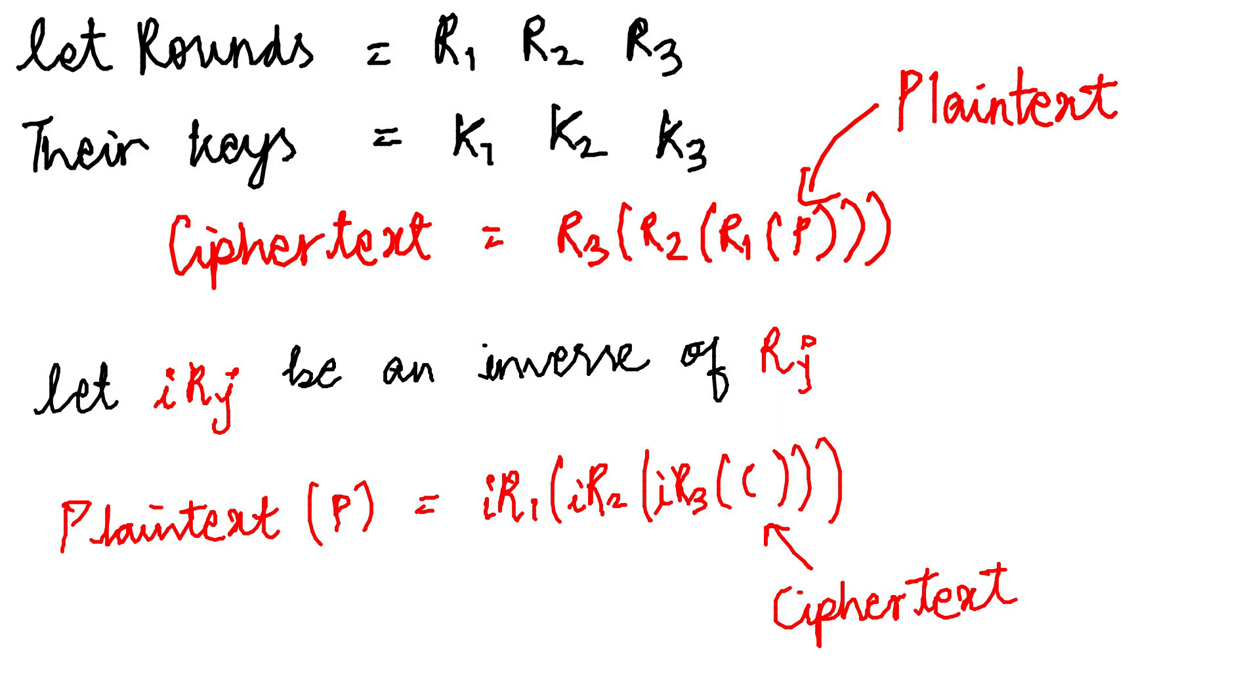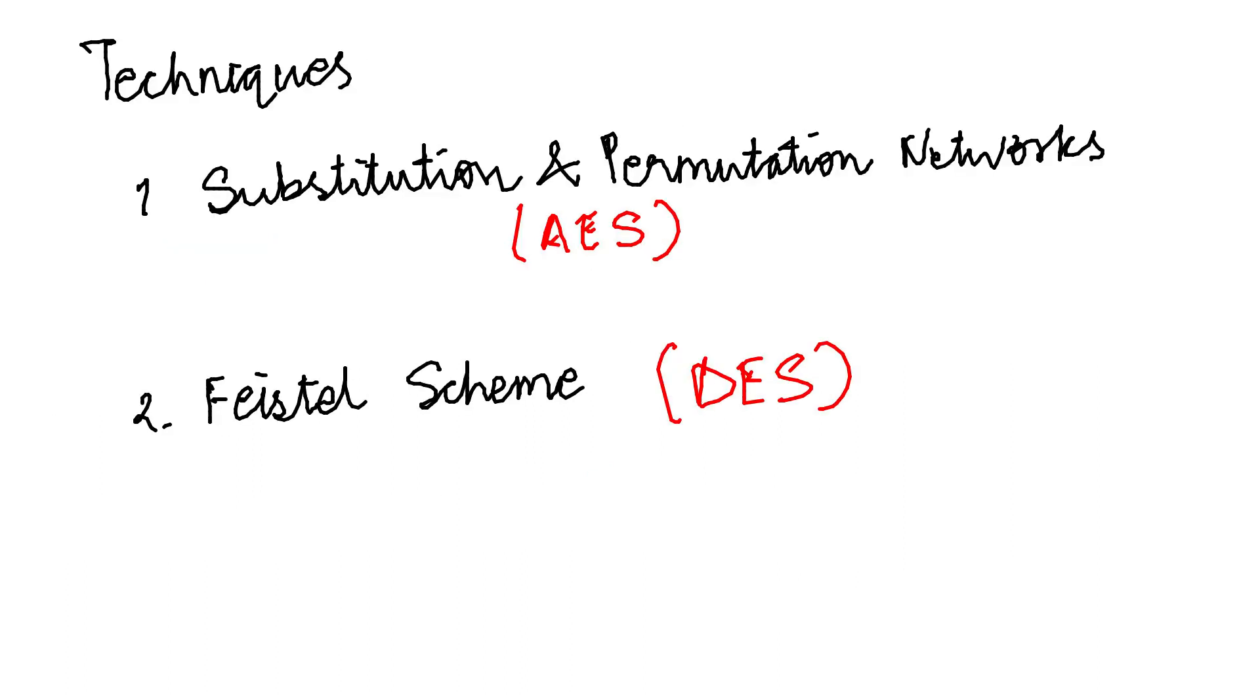Here I haven't shown the rounds taking in the keys, but in reality they do take in keys. Further, there could be one of the two techniques used to complete the scheme. For example, AES uses substitution and permutation network, while DES or triple-DES uses Feistel scheme.